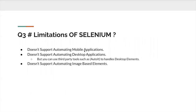Some of the limitations of Selenium: Selenium doesn't support automating mobile applications. It doesn't support automating desktop applications — using Selenium, you cannot automate desktop applications. It also doesn't support automating image-based elements. For example, if you want to read a CAPTCHA code or read any text in images, Selenium doesn't support that.